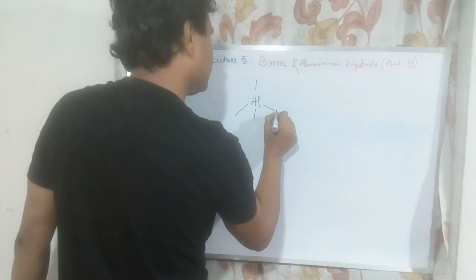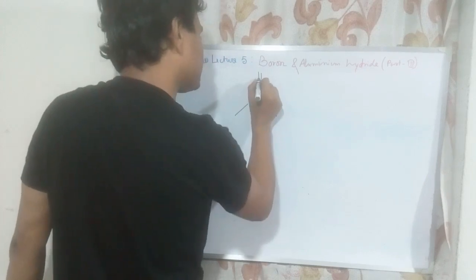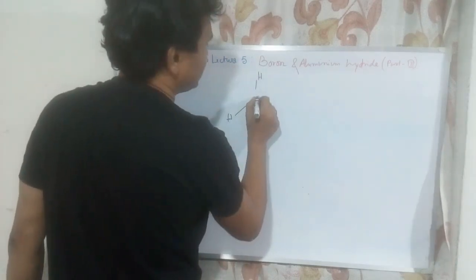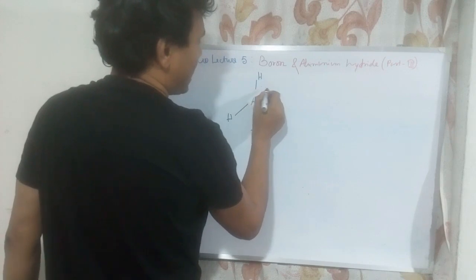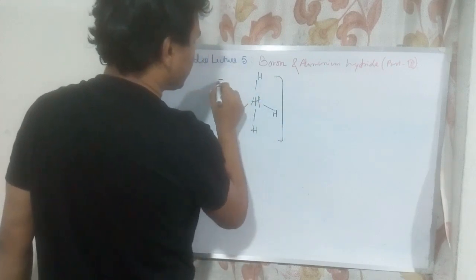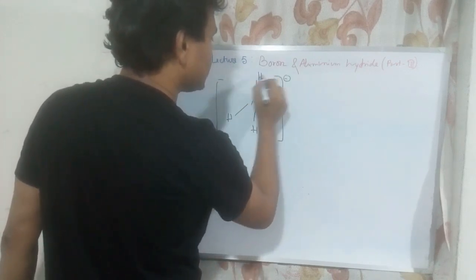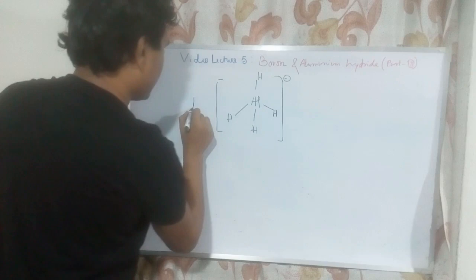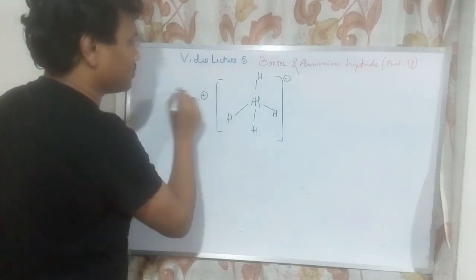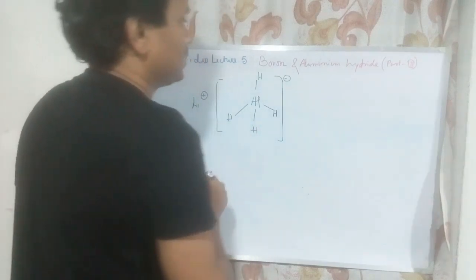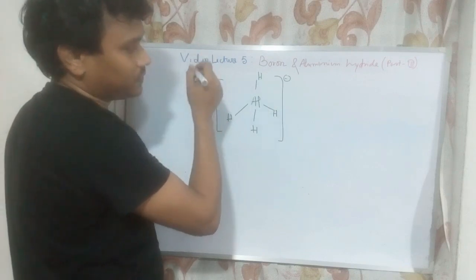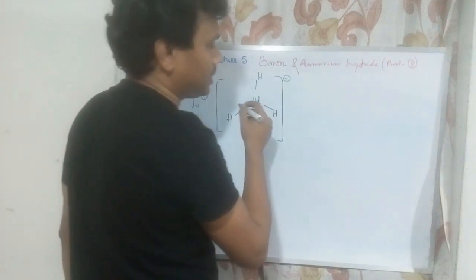This aluminium hydride is tetrahedral with sp3 hybridization, with a formal charge of 1 unit negative, and lithium remains as a counterpart to offset. Let us check the hybridization of this central aluminium.